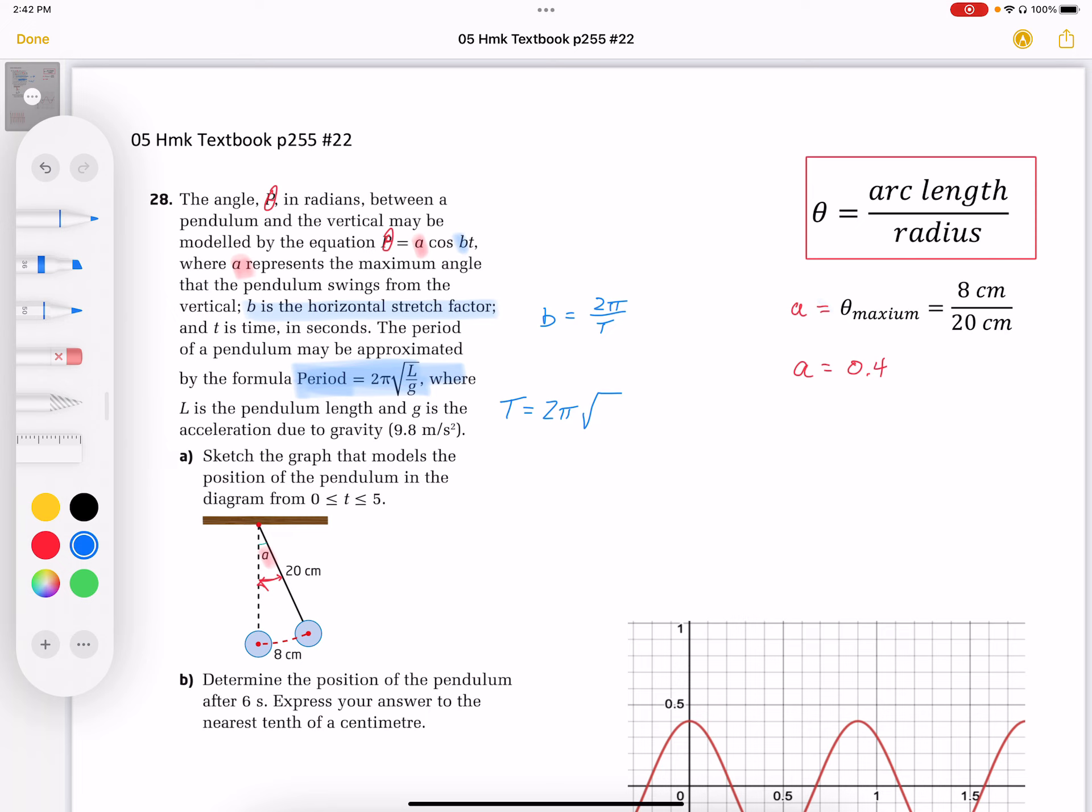The length of that pendulum is going to be 0.2 meters over 9.8 meters per second. And when we work this out, this works out to be about 0.9 seconds represents a period.